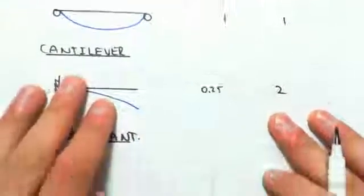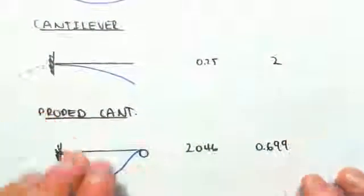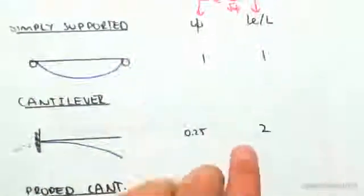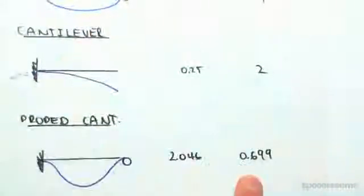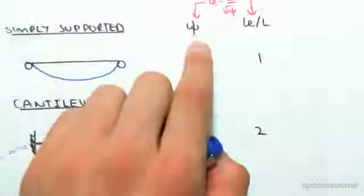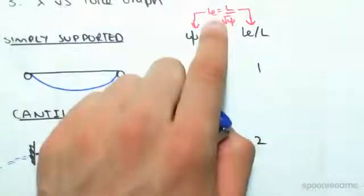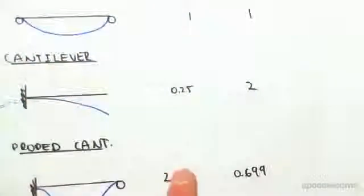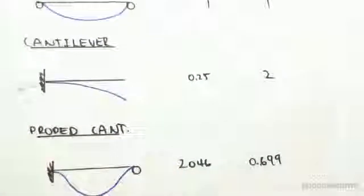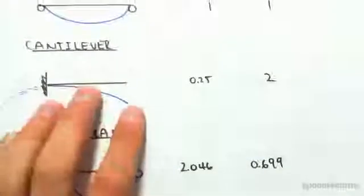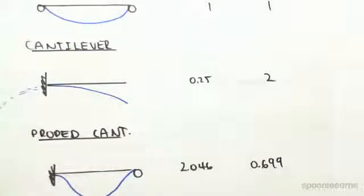The next one we have is the propped cantilever. Its LE on L is 0.699, and its psi value, using this, would give you 2.046. These are just things you'd want to remember because it's going to make the next thing a little bit easier.